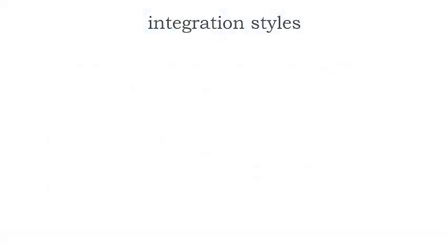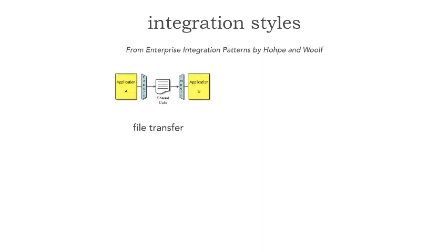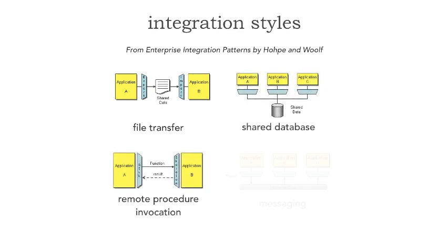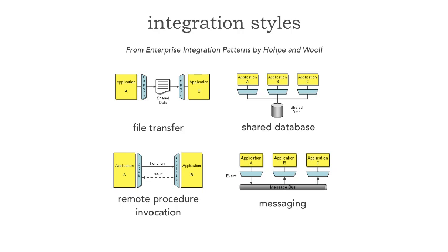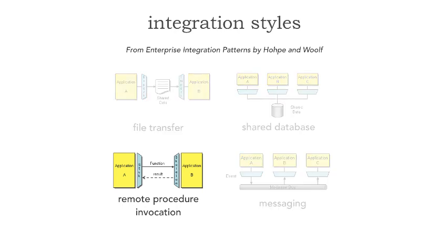To review from last week, in the book Enterprise Integration Patterns by Gregor Hohpe and Bobby Woolf, they identified four main patterns of integration: file transfer, shared database, remote procedure invocation, and messaging. In our journey on these integration styles, we've taken a look at file transfer and shared database. In this lesson, let's take a look at remote procedure invocation.